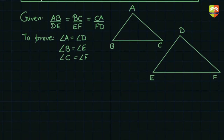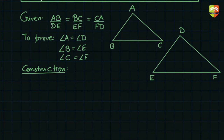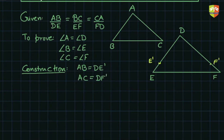Now let's do a construction. We already know congruence criteria and the Basic Proportionality Theorem which we studied in this series, and we are going to use them. The construction is: I am marking a point E' and F' on DE and DF respectively, such that AB is equal to DE' and AC is equal to DF'. Then E'F' is joined.